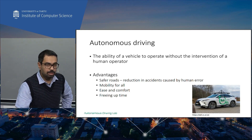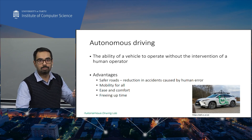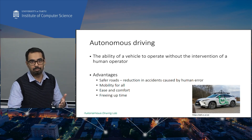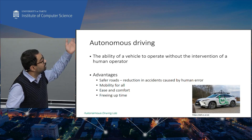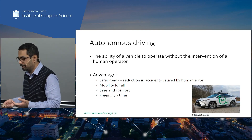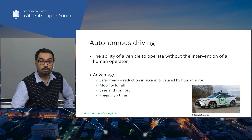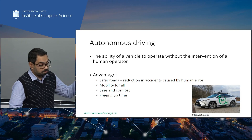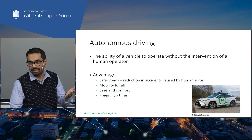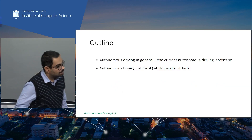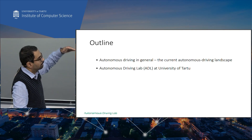There are many advantages of autonomous driving. It's tightly coupled with sustainability: as more vehicles become autonomous, there will be less congestion on the roads, more possibilities to use shared vehicles, and people won't be driving alone. Additionally, there are safer roads — more than 95% of accidents are caused by human error. There's also mobility for all: kids could travel around without needing a driver's license.